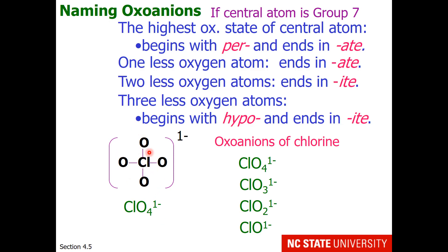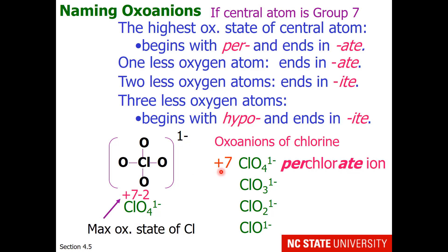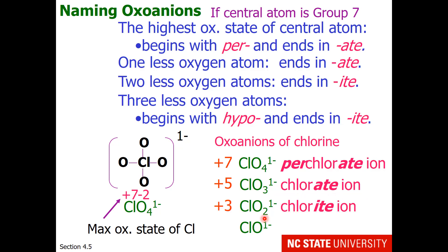In ClO4 1−, chlorine is in the middle surrounded by four oxygens. Each oxygen is −2, making −8 total; something minus 8 must equal −1, so chlorine is +7 — the highest oxidation state. This ion is called the perchlorate ion. With one less oxygen, chlorine drops to +5: the chlorate ion. With two less oxygens, chlorine is +3: the chlorite ion. With only one oxygen, chlorine is +1: the hypochlorite ion.